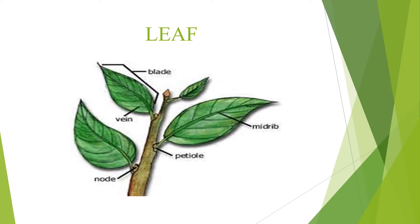You can see the blade which is also called the leaf blade or lamina. These are the veins. This is the mid rib. And these are the petiole and the nodes.